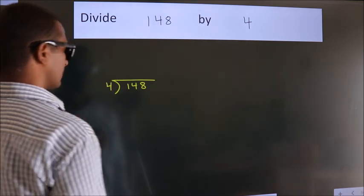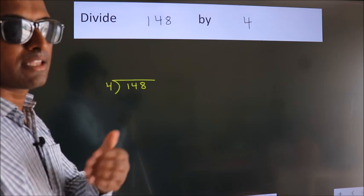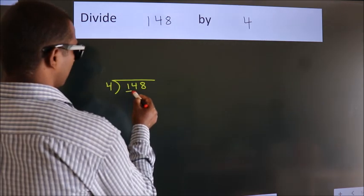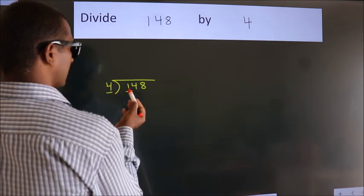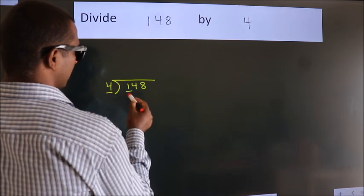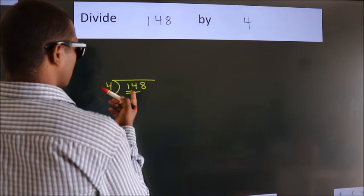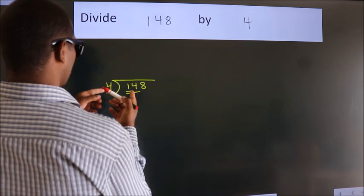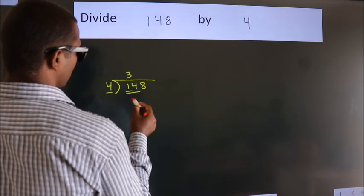This is your step 1. Next, here we have 1, here 4. 1 is smaller than 4, so we should take 2 numbers: 14. A number close to 14 in the 4 times table is 4 threes, which is 12.